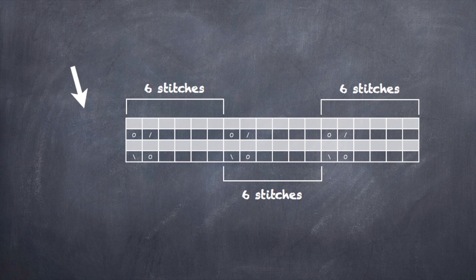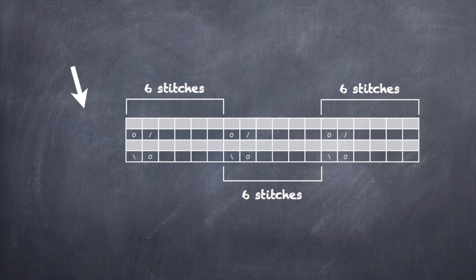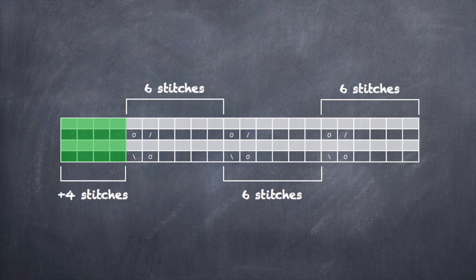But we have another problem. We're missing something on this side. The pattern's not quite even. So what we need to do is add in those other four stitches.